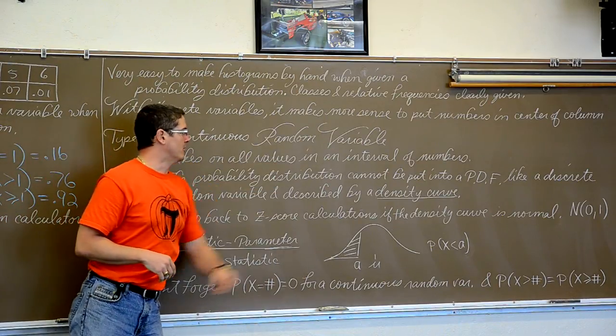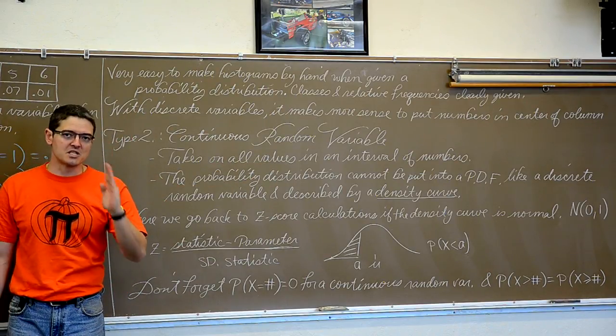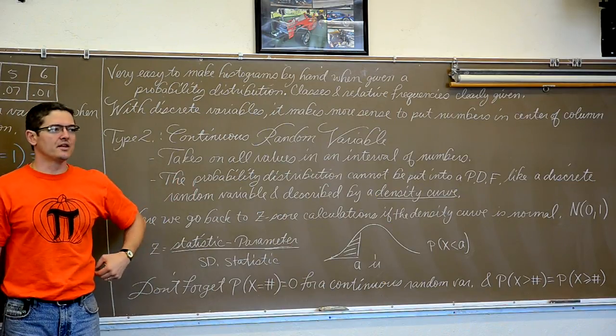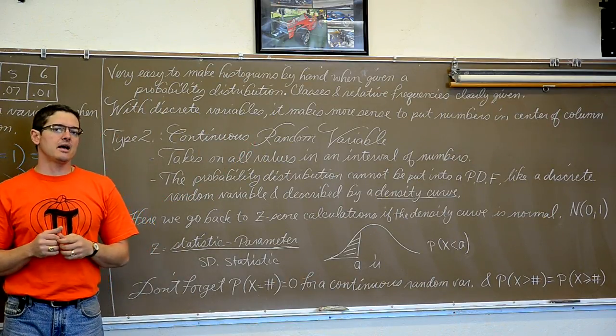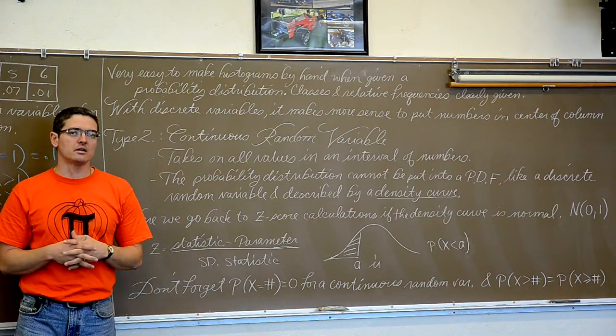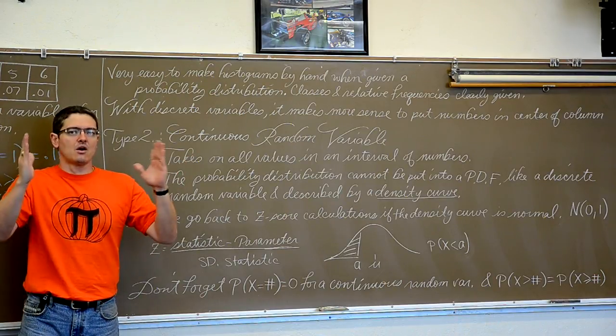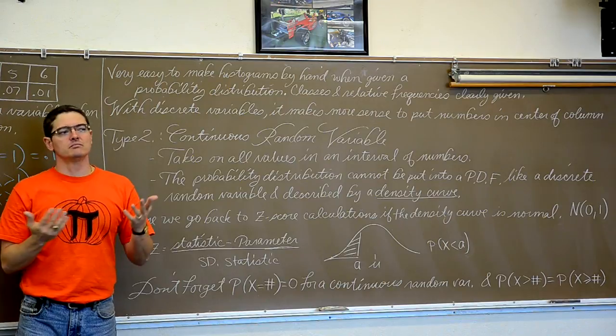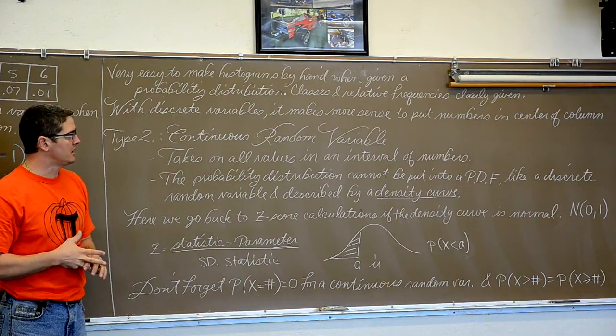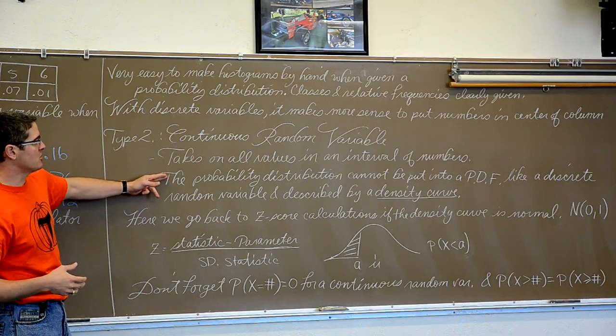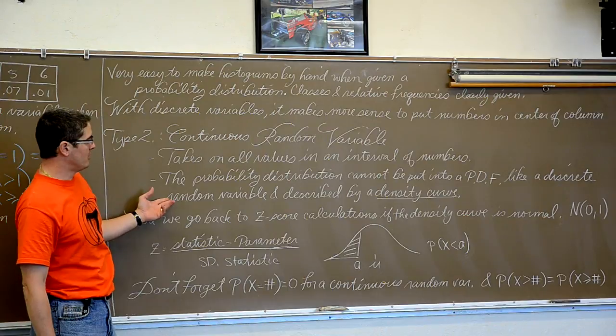Type two of the variable: Continuous random variable. It takes on all values in an interval of numbers. All values, not specific, countable values. So within whatever interval is appropriate for your word problem, maybe it is simply 10 to 20, the x variable or the random variable can take on all and any values between whatever your min and max value is. If there even is a hard set interval, which in a continuous random variable by theory there really is not. So there is an infinite number of possibilities that x can take on, or values. The probability distribution cannot be put into a nice clear PDF table like a discrete random variable.